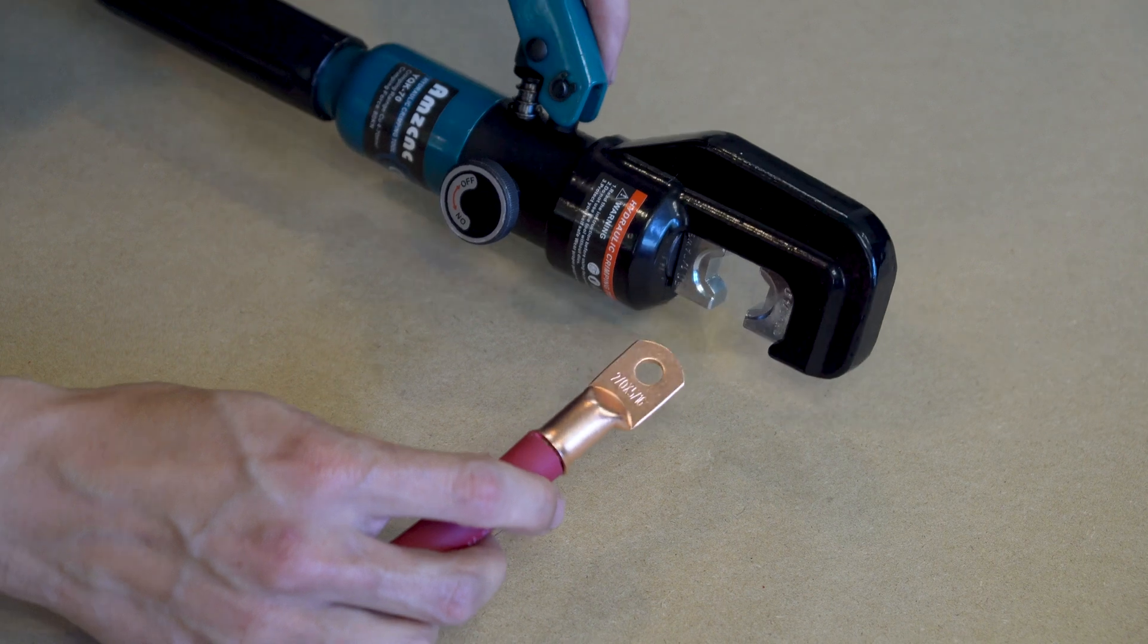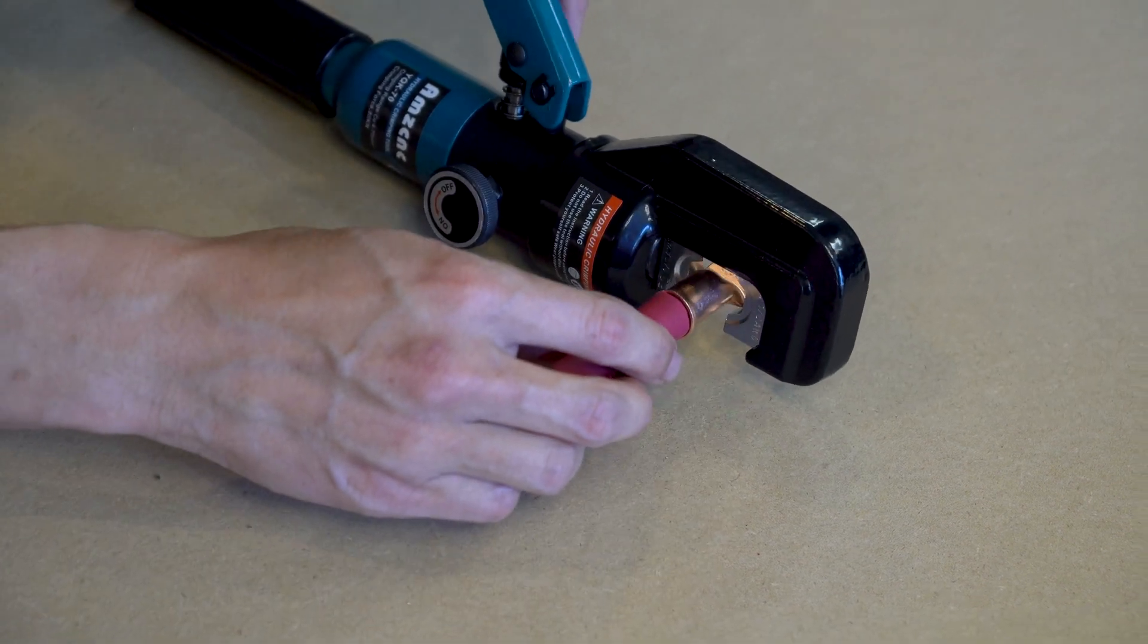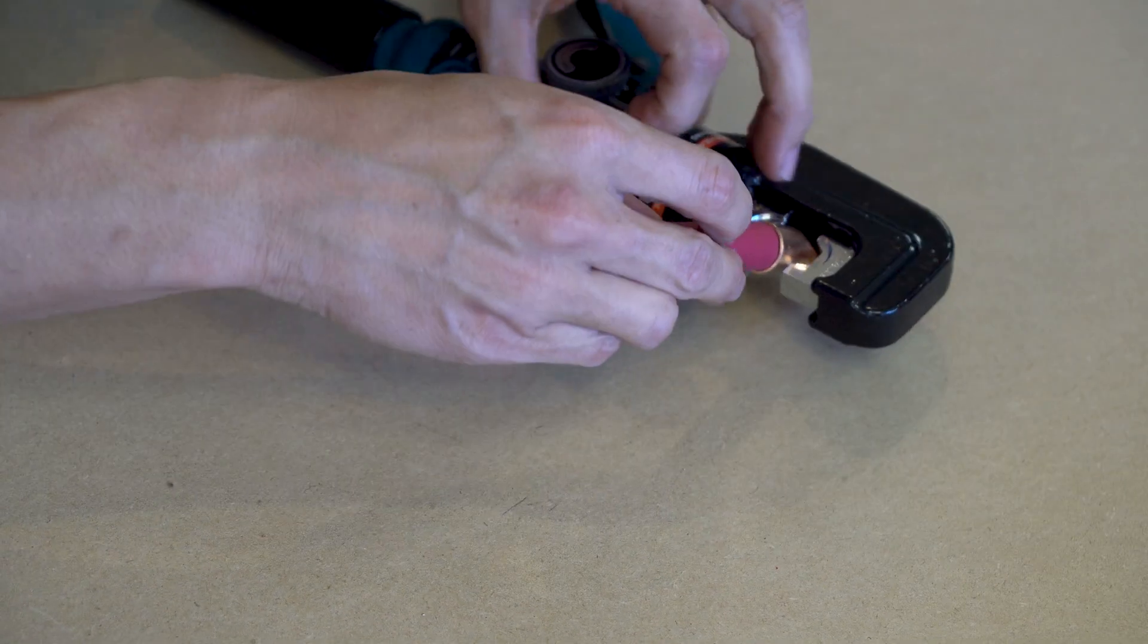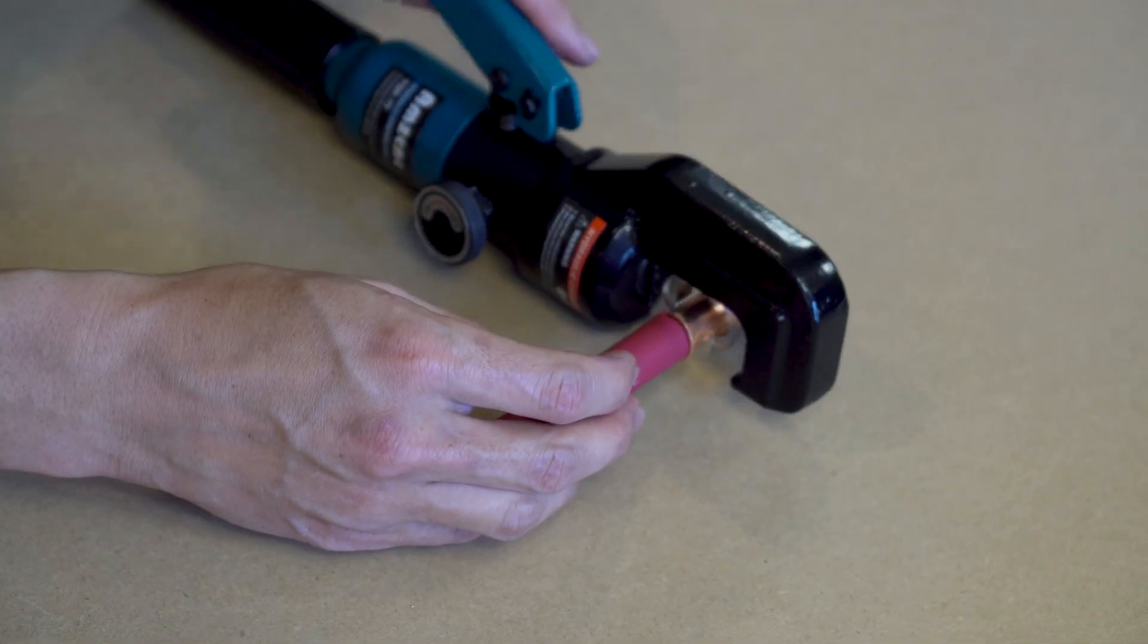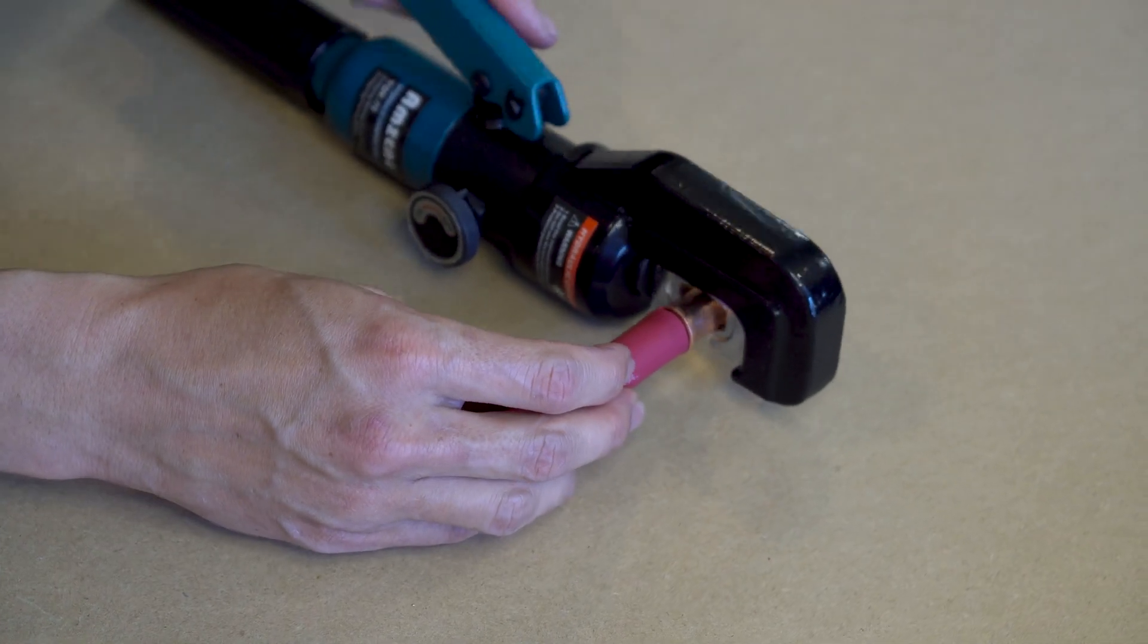Then, when you're ready, insert the lug into the crimper and begin squeezing the handles to make your crimp.